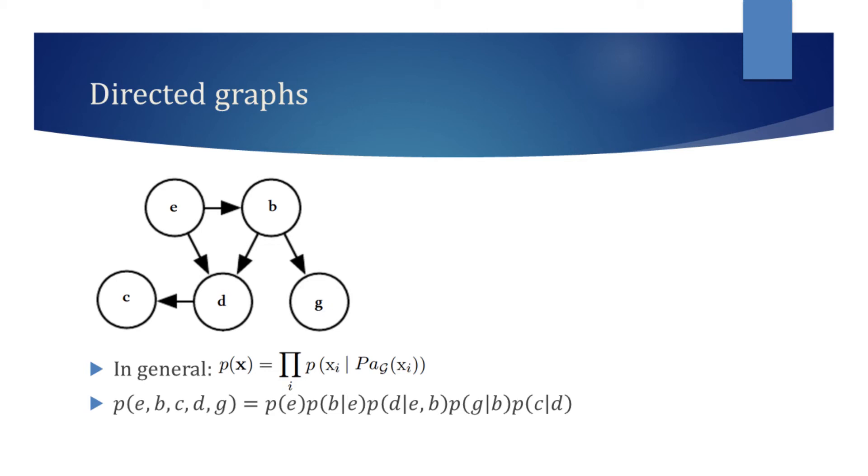The node d has two arrows directed towards it, meaning it has two parents. Hence we write the probability of d given e and b.